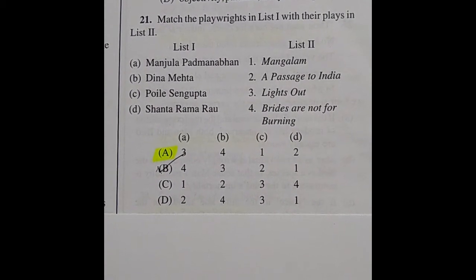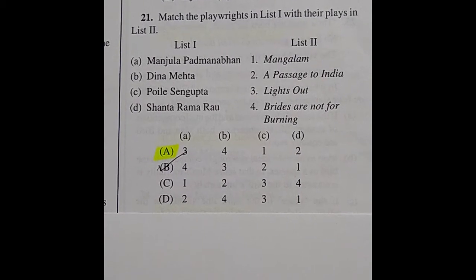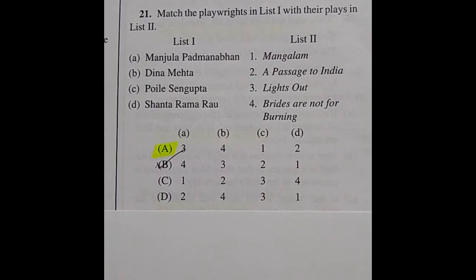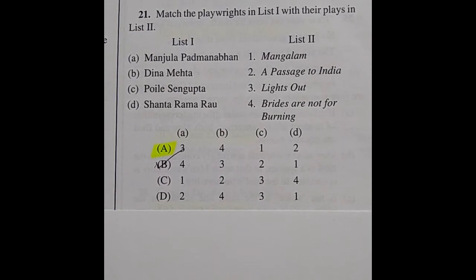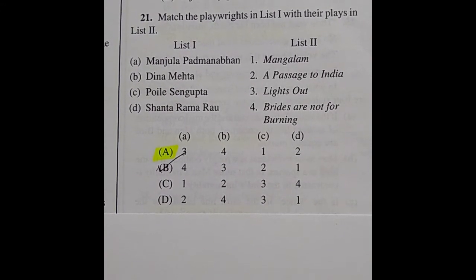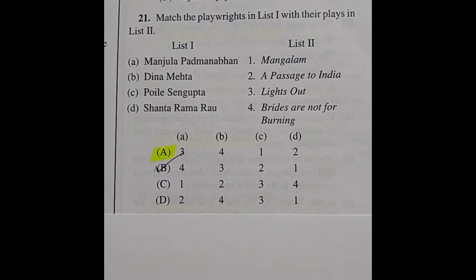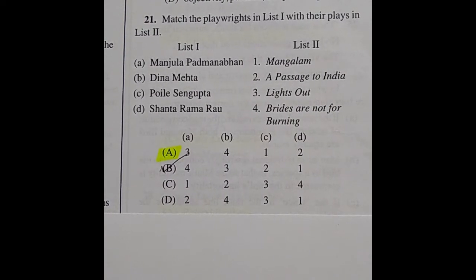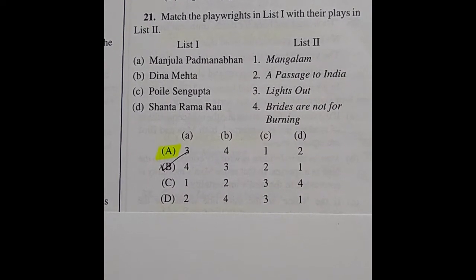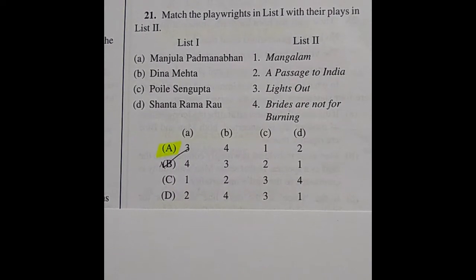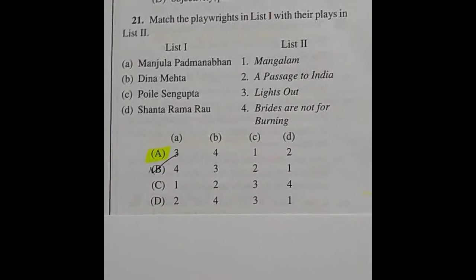Question 21: Matching list — the right answer is option A: Manjula Padmanabhan is related to Lights Out; Poile Sengupta is related to Mangalam; Santha Rama Rau is related to A Passage to India.